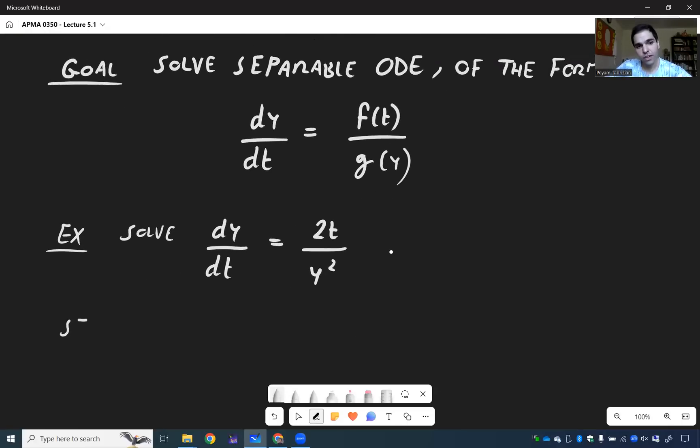So the first thing we want to do here is to separate the variables, meaning put all the y on one side and all the t on the other side.